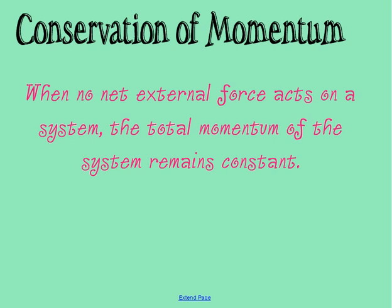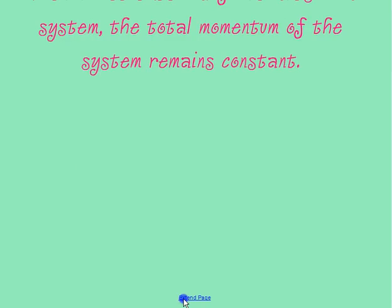When we have a conservation of momentum problem, we will look at the initial momentum of the system and set it equal to the final momentum of the system. Conservation of momentum problems will often deal with collisions.